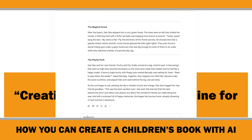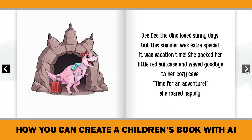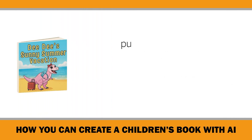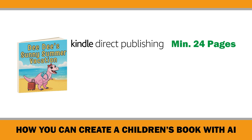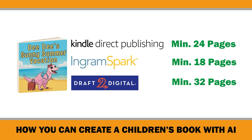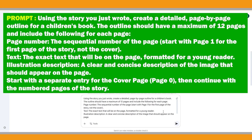With the character and story aligned, the next step was to create a page-by-page outline for the children's book. I asked Gemini for a 12-page outline because my plan was to have text on the right pages and illustrations on the left — that way the final book would have 24 pages total, which is the minimum required to publish on platforms like Amazon KDP. Other platforms have different requirements: Ingram Spark accepts as few as 18 pages, while Draft2Digital usually asks for at least 32.